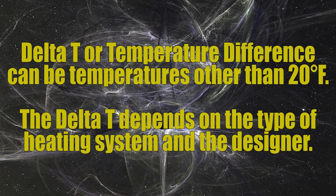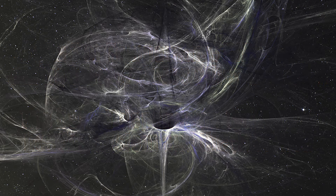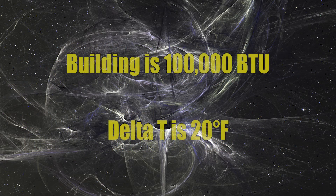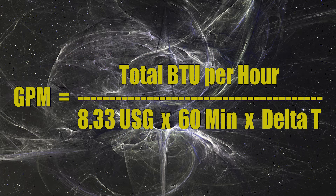Just to be clear, boiler systems do not need to be run at a 20 degree Fahrenheit temperature difference — that's just my example. Many systems use less than that; it depends on the type of system being installed and the designer. So once again: I've got a 100,000 BTU building, a delta T of 20 degrees Fahrenheit, and now I get to plug those numbers into this formula.